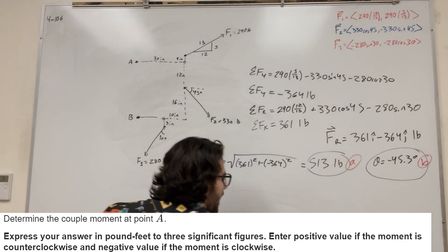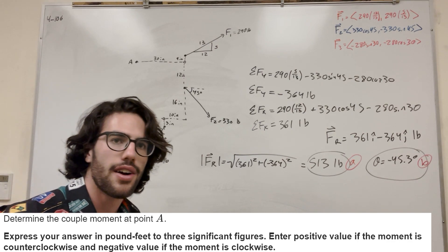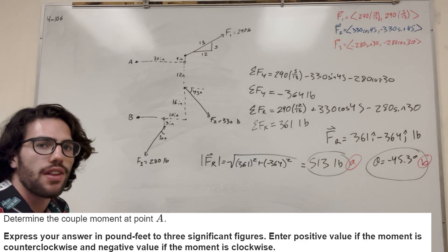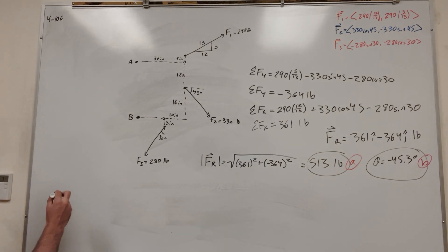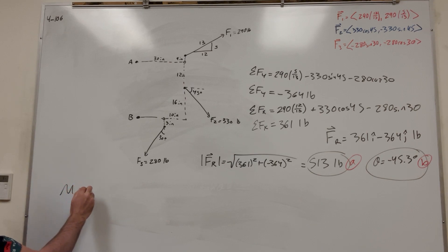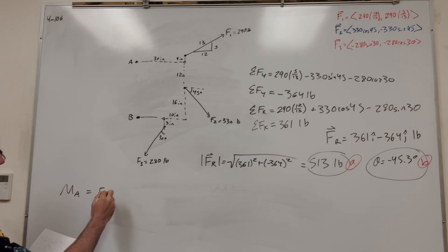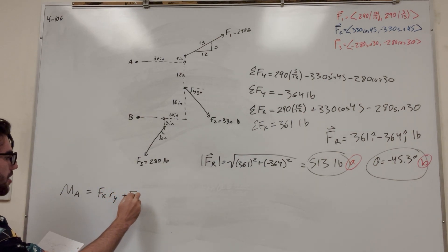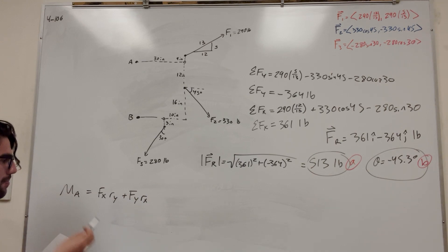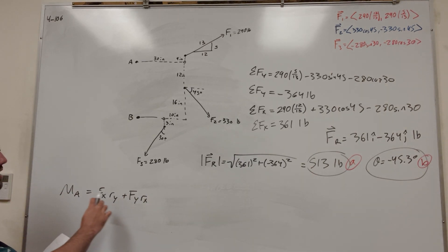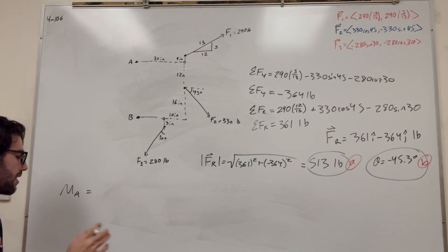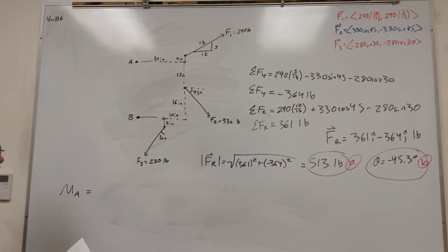For part C, we're trying to find the moment about A. We're going to have to find the moment of all these forces. The moment is the force in the X direction times its distance in the Y direction, added to force in the Y direction times distance in the X direction. We need to do this for each one of them and then add them together.